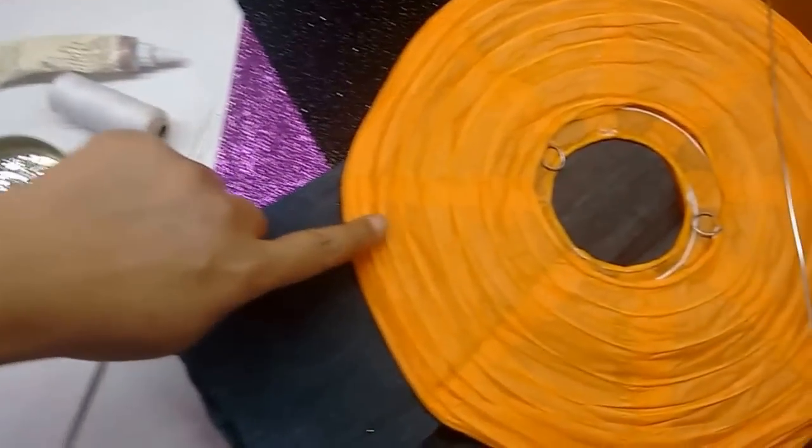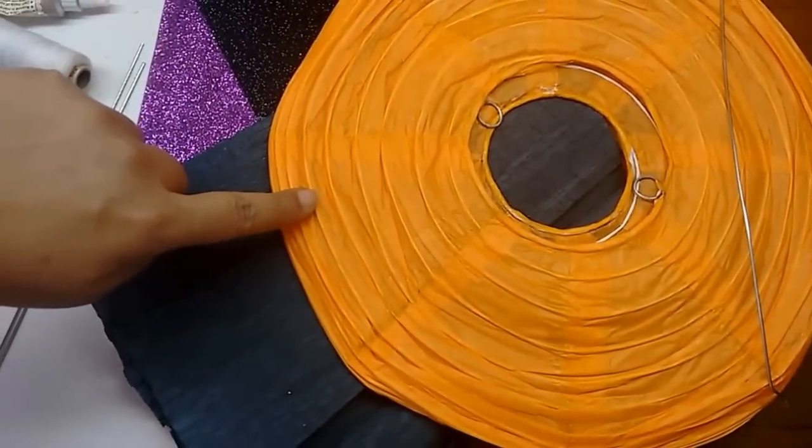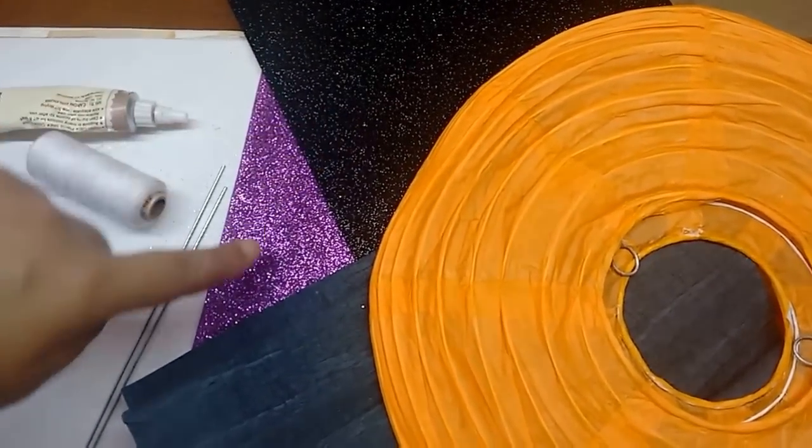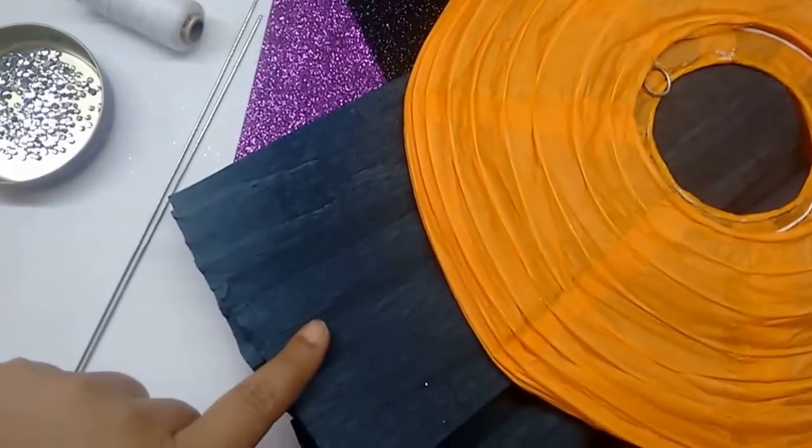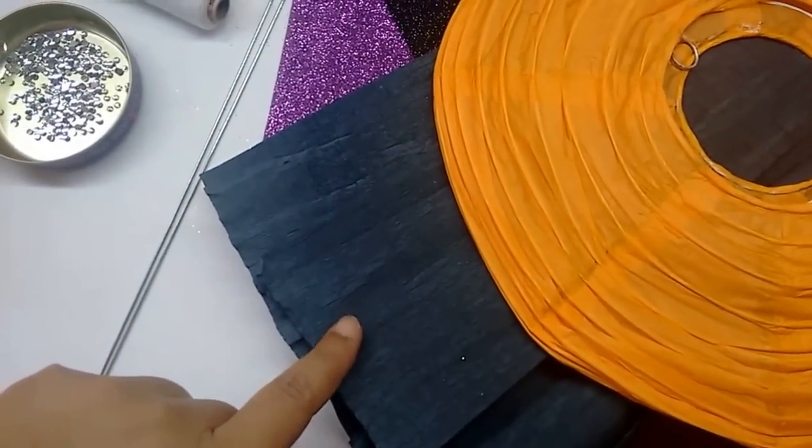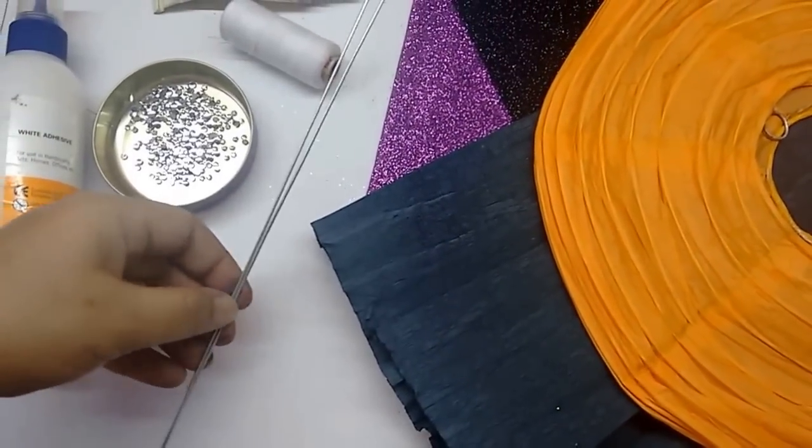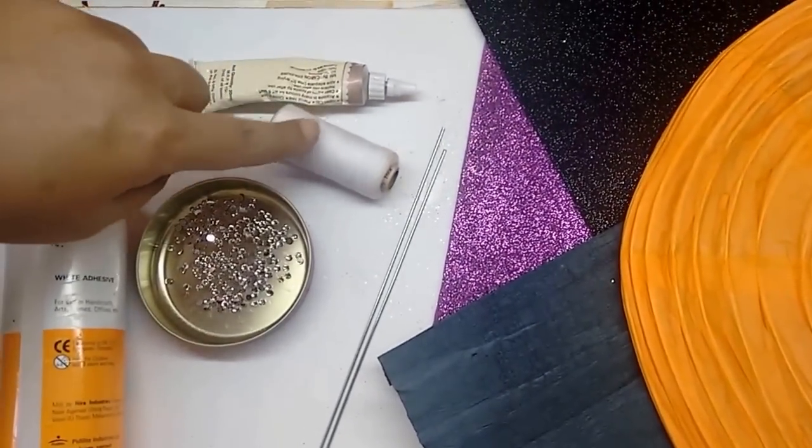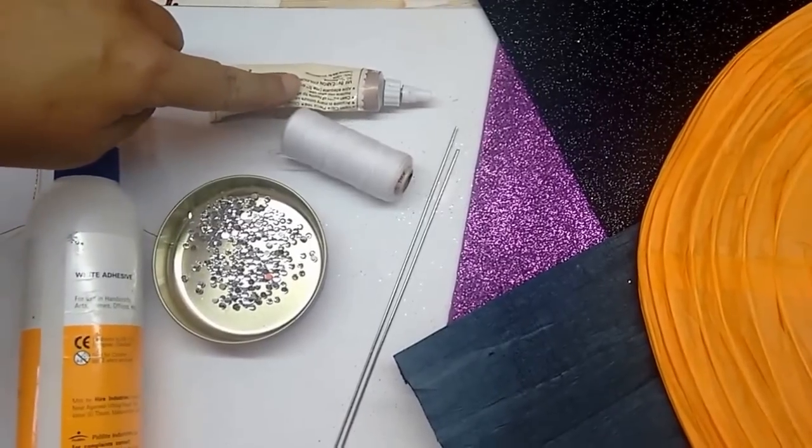The materials required are an orange colored paper lantern, glitter foam sheets in black and purple, black paper single sheet, two slightly strong thick wires, white thread, copper color glitter glue.